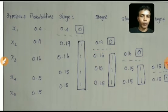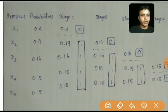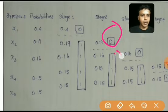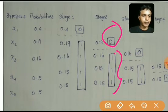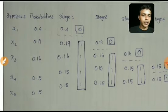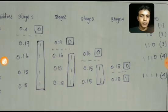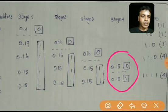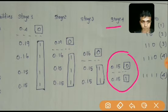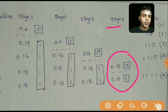Again, the upper part has only one probability, 0.19, and all the other probabilities are in the lower part. We assign 0 to the upper part probability and 1 to all probabilities in the lower part. We repeat this procedure until we are done. The process continues through Stage 4, where all probabilities have been divided into upper and lower parts and further division is not possible.